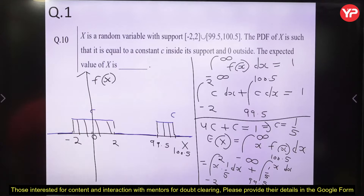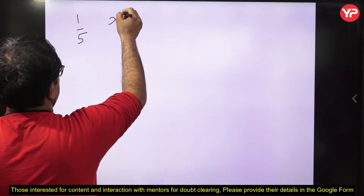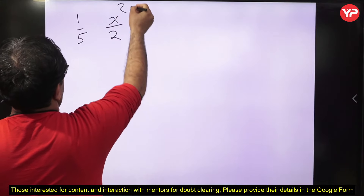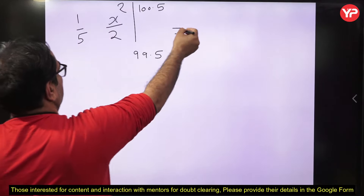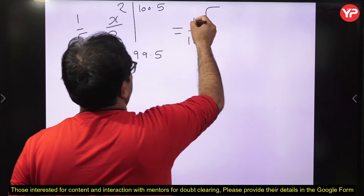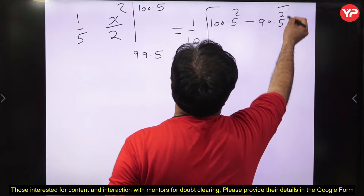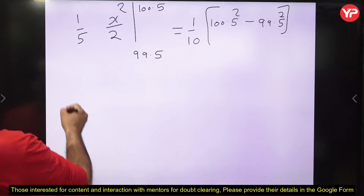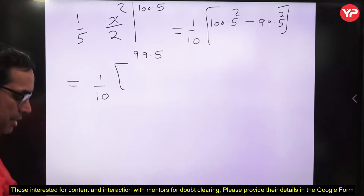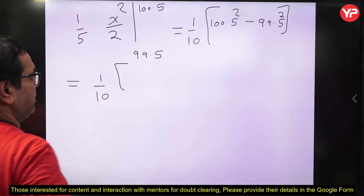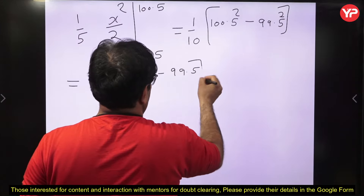For the second part: (1/5) times the integral of x from 99.5 to 100.5, which equals (1/5)·[x²/2] from 99.5 to 100.5, giving (1/10)·(100.5² − 99.5²). Using the identity A² − B² = (A−B)(A+B): (100.5 − 99.5) = 1 and (100.5 + 99.5) = 200. So (1/10)·1·200 = 200/10 = 20. The expected value of X is 20.